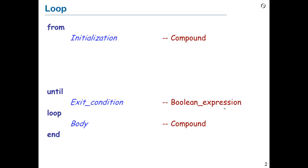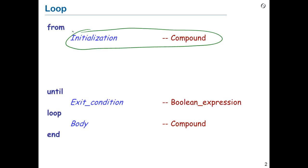Let me start with the simple syntactic description of what the loop looks like in Eiffel, at least in the basic form. It's quite straightforward: from, until, loop, end. The from clause introduces an initialization — this is how we start the computation. Sometimes it's empty, although the from keyword has to be there, but the corresponding compound — that is to say, sequence of instructions — can be empty. But usually it's not, because usually a loop needs an initialization.